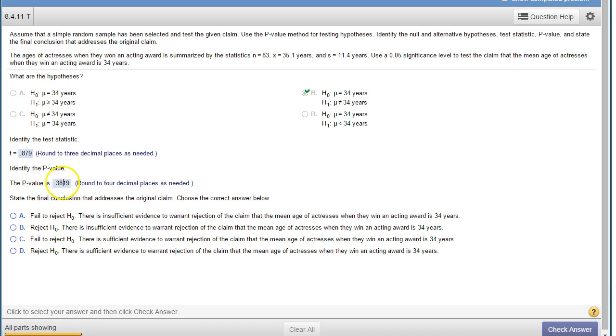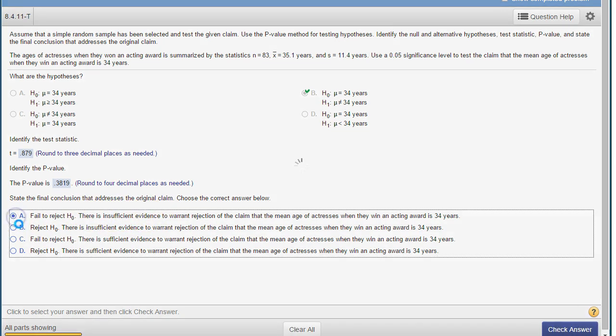And then our conclusion. The p-value is bigger than alpha .05. So because your p-value is bigger than alpha, you fail to reject the null hypothesis. So it's either A or C. And when we fail to reject it, it's because there is not sufficient evidence. So it's going to be A. There's insufficient evidence.